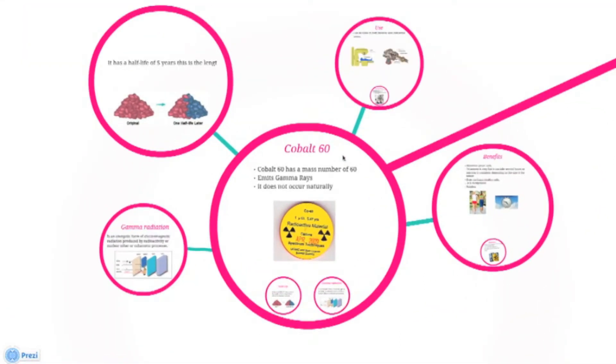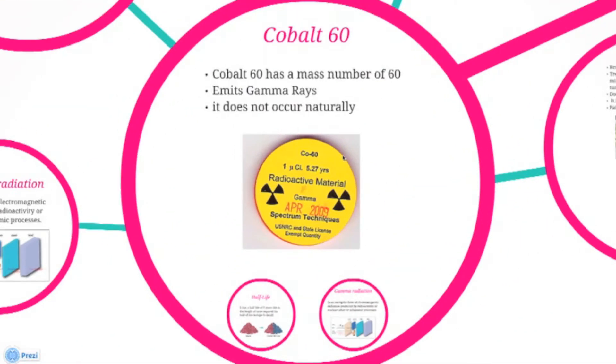Cobalt-60 is a very common radioisotope. It has a mass number of 60. Cobalt-60 is produced artificially by neutron activation.